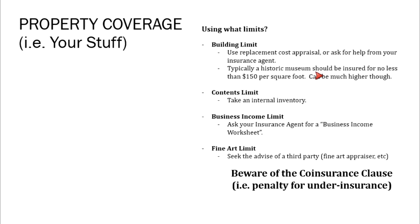For your contents limit, your insurance agent can help somewhat, but it comes down to your inventory — gift shop inventory, computers, desks, lawn equipment. Your business income limit is harder to determine; there's a business income worksheet your insurance agent can provide that takes into account your revenue and expenses to help determine an appropriate limit. Your fine arts limit is something you probably know well — you want a schedule and an appraiser depending on the size of your collection. At the very least, have some sort of schedule of items, especially high-value items. The more documentation you have, the better.